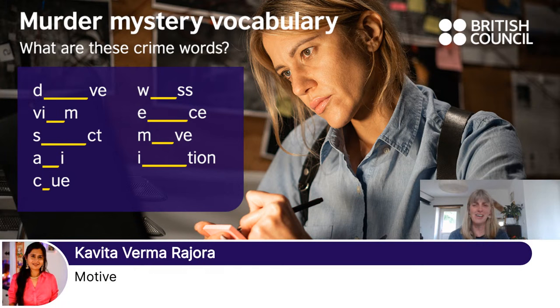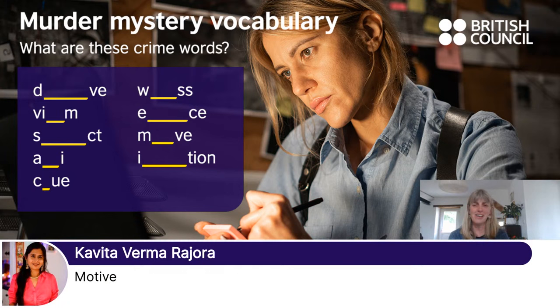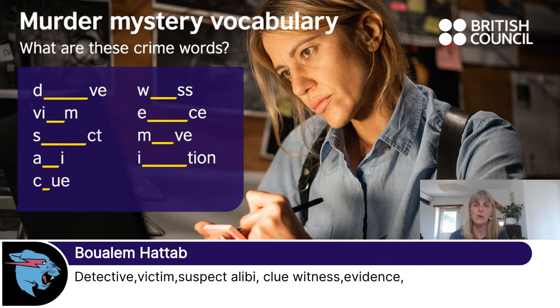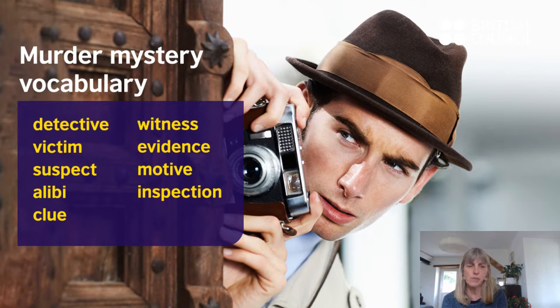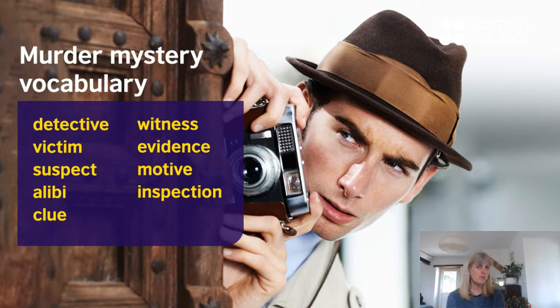Information — that's a good guess. Motive — yes, the motive is the reason that somebody has for the crime or the murder. Lots of answers here: detective, victim, suspect, alibi, clue, witness, evidence. Yes, very good. Let's have a look at the answers. I think we got most of these: detective, victim, suspect, alibi, clue, witness, evidence, motive, inspection. There were a few possibilities beginning with I and ending I-O-N, but here we've got inspection.